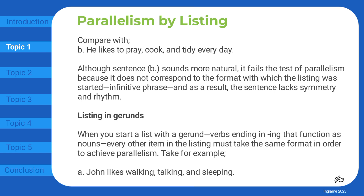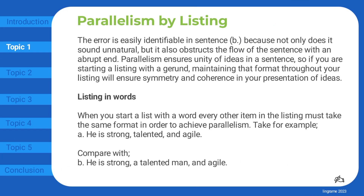Listing in gerunds. When you start a list with a gerund — verbs ending in -ing that function as nouns — every other item in the listing must take the same format in order to achieve parallelism. Take for example: John likes walking, talking, and sleeping. Compare with: John likes walking, talking, and to sleep. The error is easily identifiable in sentence B, because not only does it sound unnatural, but it also obstructs the flow of the sentence with an abrupt end. Parallelism ensures unity of ideas in a sentence, so if you are starting a listing with a gerund, maintaining that format throughout your listing will ensure symmetry and coherence in your presentation of ideas.